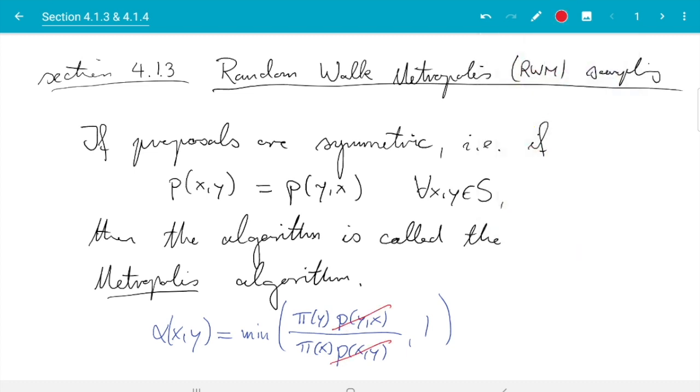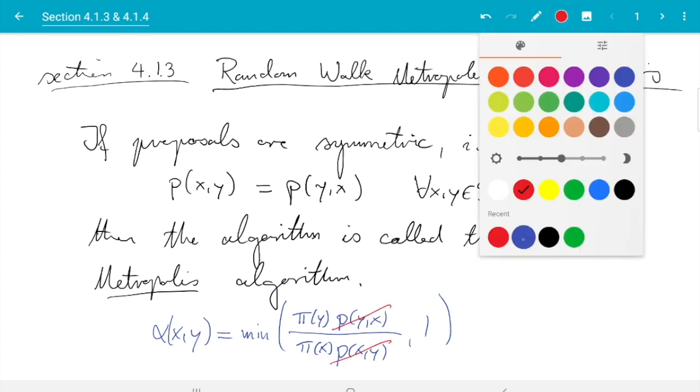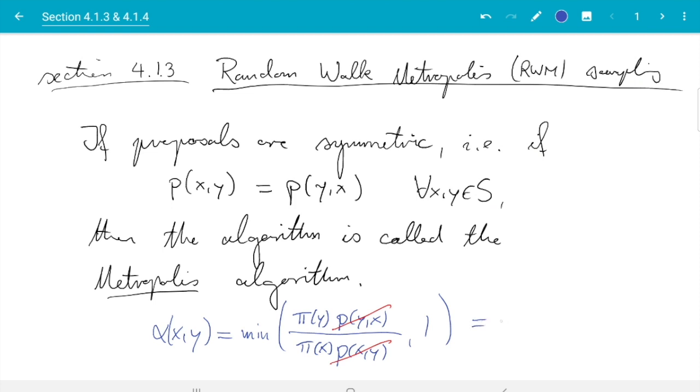And if p is symmetric these two terms cancel and what we get is just minimum pi of y divided by pi of x with 1. So that simplifies things a bit.